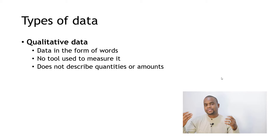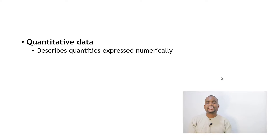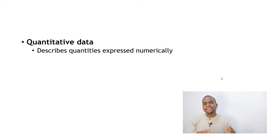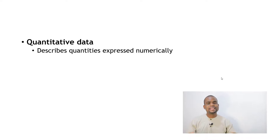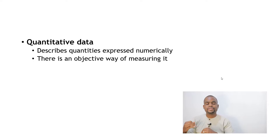The second type of data is quantitative data — from the word 'quantities.' Quantitative data describes quantities expressed numerically. For example, if I ask how old you are, you give me a number like 20 or 30. Or 'how many people are in the same room?' Since these numbers are objectively defined — someone who is 20 years old in one country is 20 years old in another — and we have objective ways of measuring, that's quantitative data.